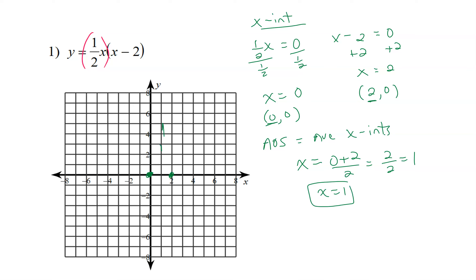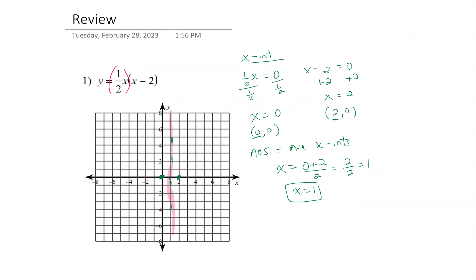So we know the axis of symmetry happens right here. There's our axis of symmetry. It goes right through the middle of those two x-intercepts that we found.